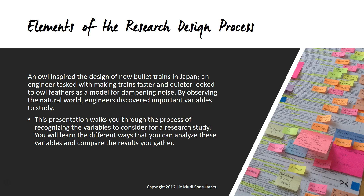An example of the elements of the research design process would be an owl inspiring the design of a new bullet train in Japan. An engineer tasked with making trains faster and quieter looked to owl feathers as a model for dampening noise. By observing the natural world, engineers discovered important variables to study. This presentation will walk you through the process of recognizing variables to consider for a research study and how to analyze and compare the results you gather.